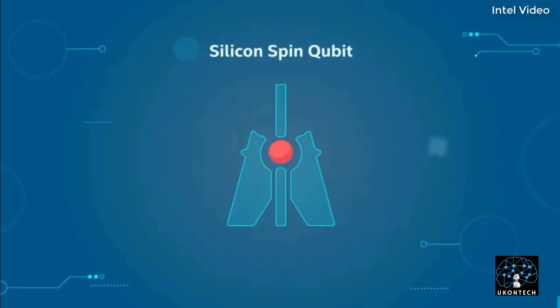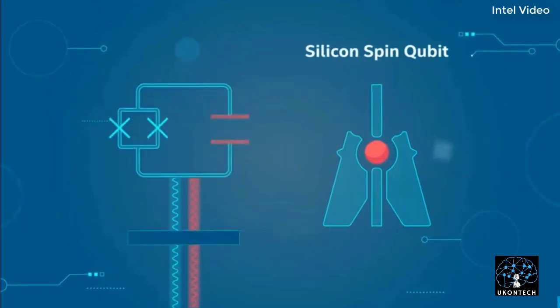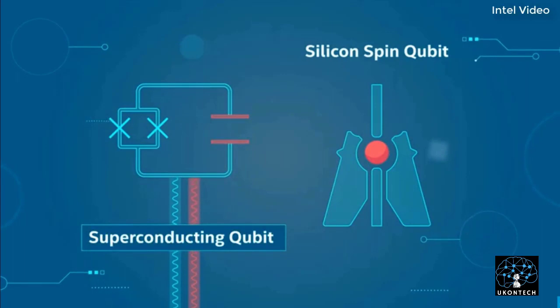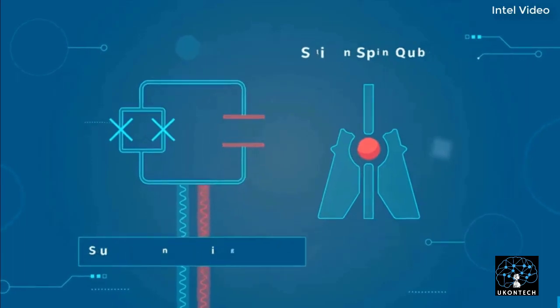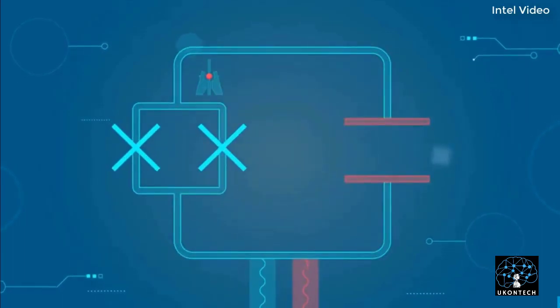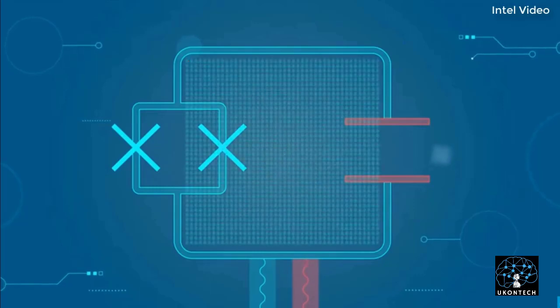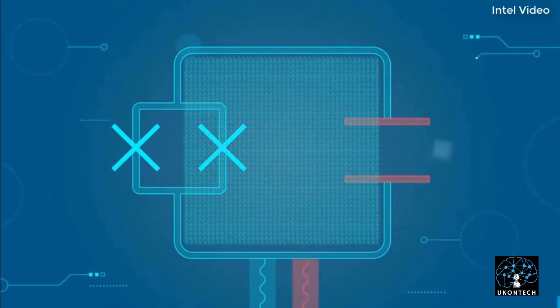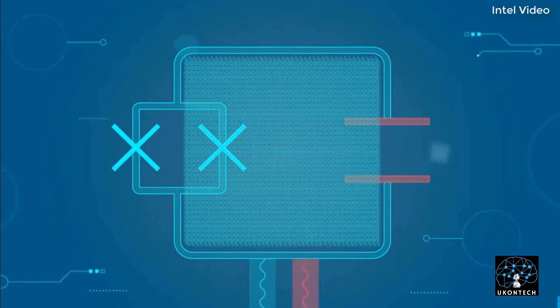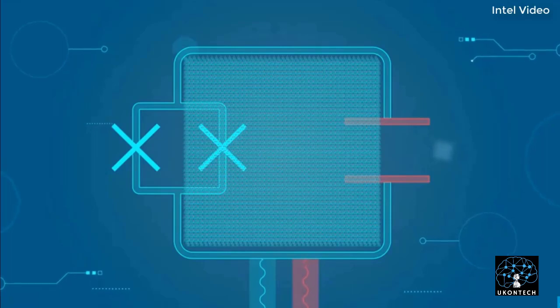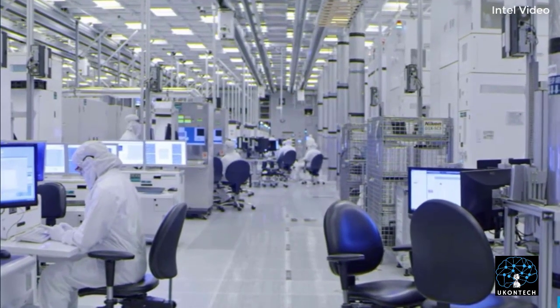According to the company, Horse Ridge 2 offers enhanced capabilities and deep integration of quantum system control. According to Intel's quantum team, it can manipulate and read the state of qubits and control the potential of gates that entangle multiple qubits. Horse Ridge 2 demonstrates Intel quantum computing leadership, mainly within the discipline of quantum cryogenic controls, according to Jim Clark, Intel Director of Quantum Hardware, Components Research Group, Intel.